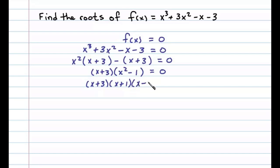And that's equal to 0. Once we have it factored equal to 0, we then set each variable factor equal to 0. So either x + 3 = 0 or x + 1 = 0 or x - 1 = 0.